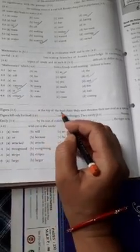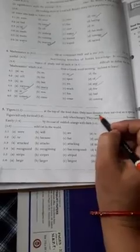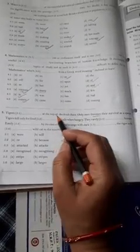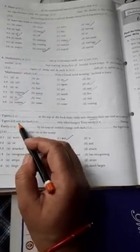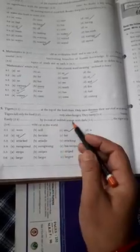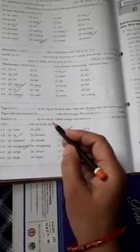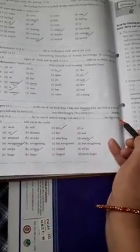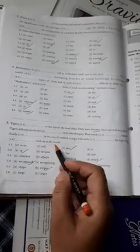Come to the last one. Tigers dash at the top of the food chain, only men threaten their survival as species. Present tense. Tigers are at the top of food chain, only men threaten their survival as a species. Tigers kill only for food dash only when hungry, or, or only when hungry. They rarely dash humans, they rarely, they rarely attack humans. Easily dash by its coat of reddish orange, easily recognized by its coat of reddish orange with dark dash, with dark stripes. The tiger is the dash wild cat in the world, the tiger is the largest wild cat in the world. In this way you can do these gap filling exercises.